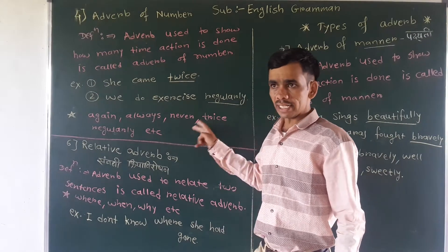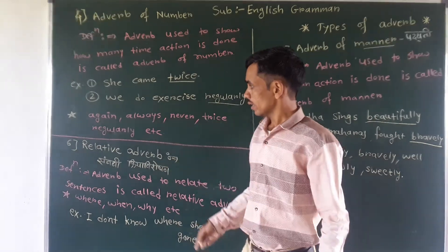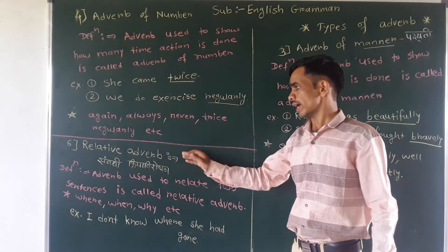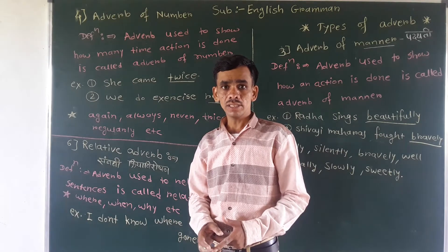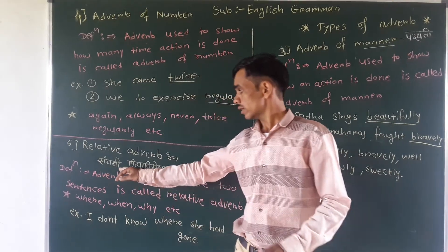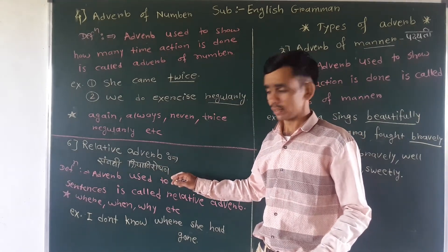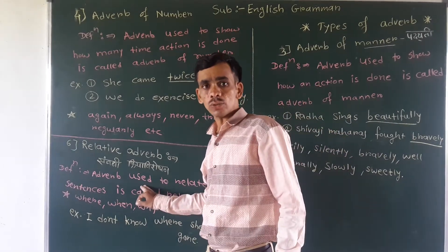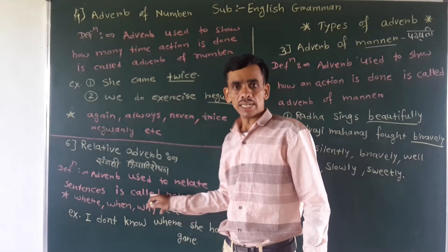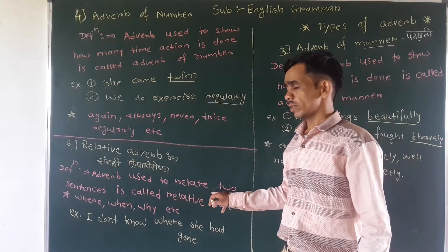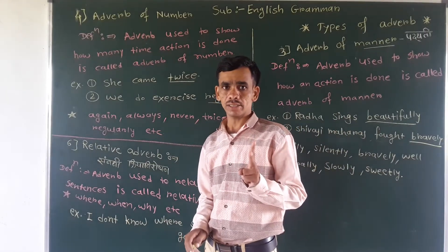So you will take these words and write down at least three to four examples. Then the next type is relative adverb. Do you know relative? Relative is nati way, but here relative means sammandha — relation. Adverb used to relate two sentences is called relative adverb.